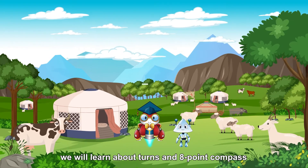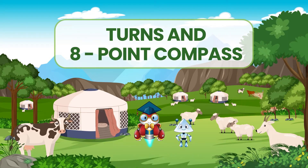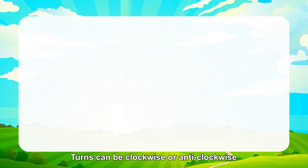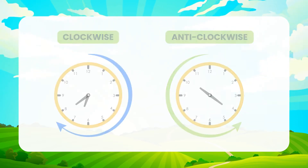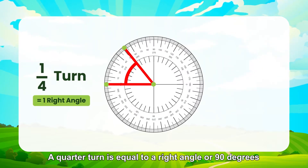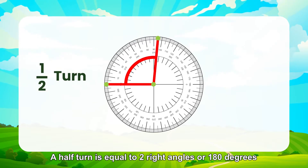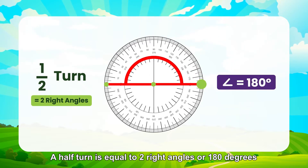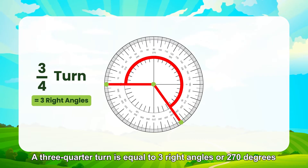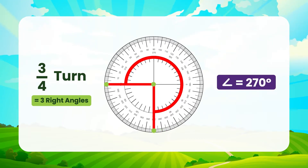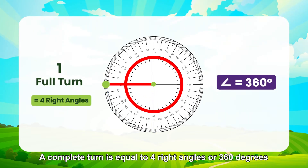In this chapter, we will learn about turns and the eight-point compass. Let's see what turns are. Turns can be clockwise or anticlockwise. A quarter turn is equal to a right angle or 90 degrees. A half turn is equal to two right angles or 180 degrees. A three-quarter turn is equal to three right angles or 270 degrees. A complete turn is equal to four right angles or 360 degrees.